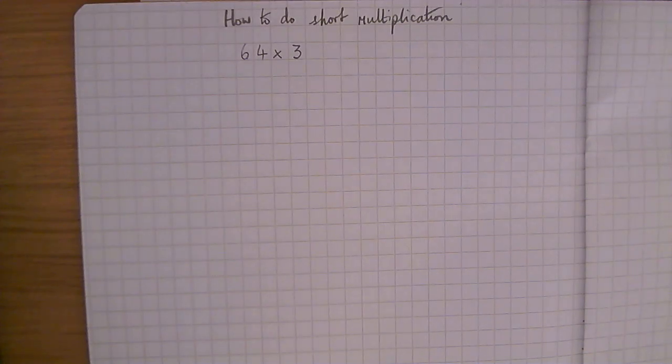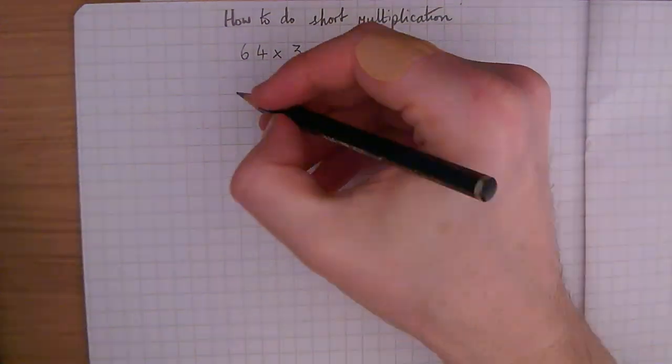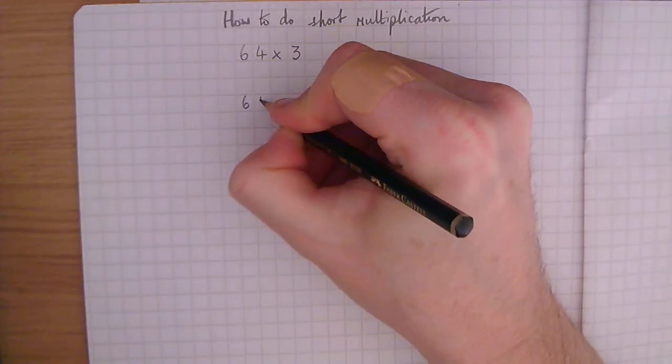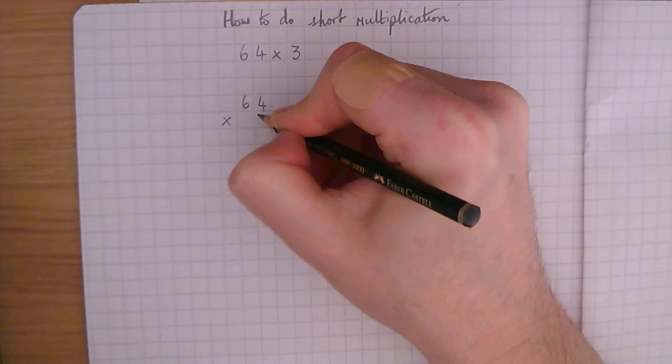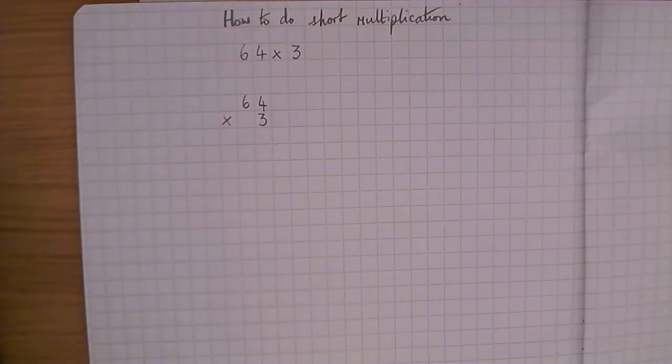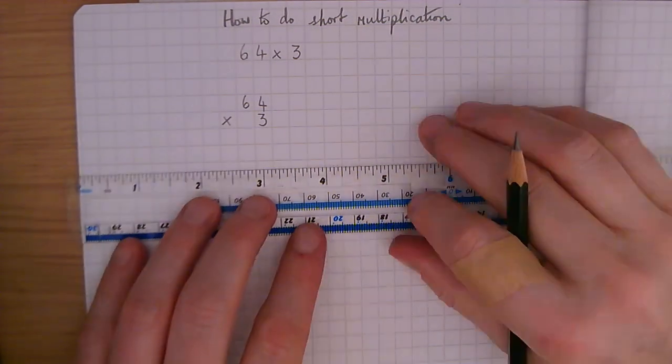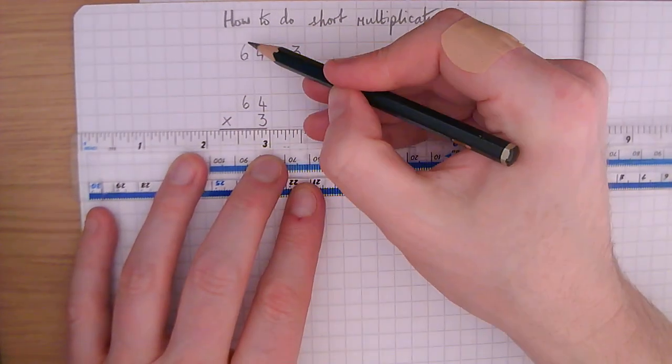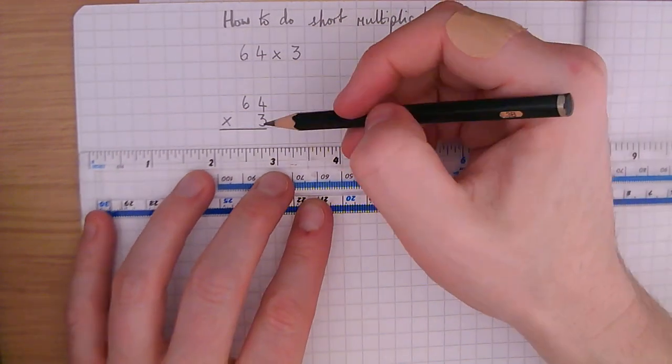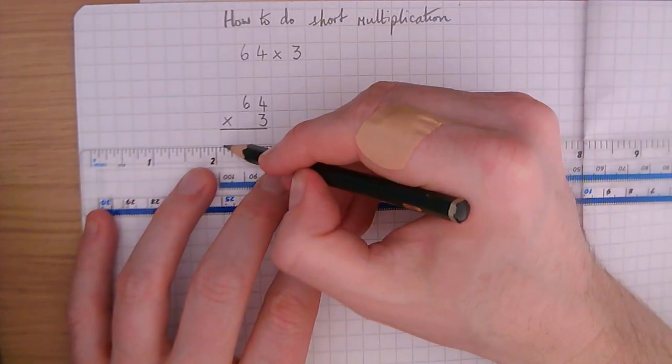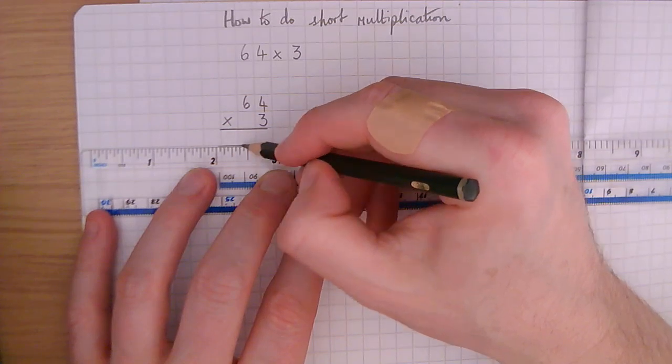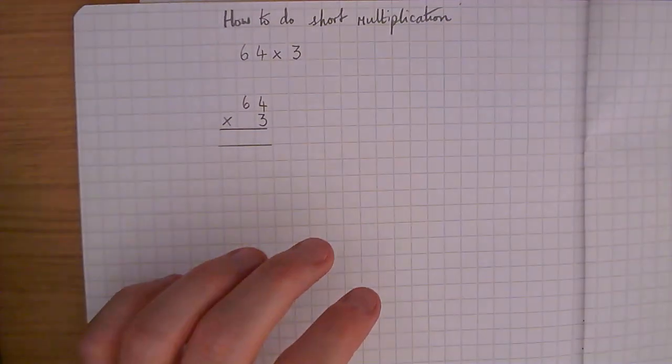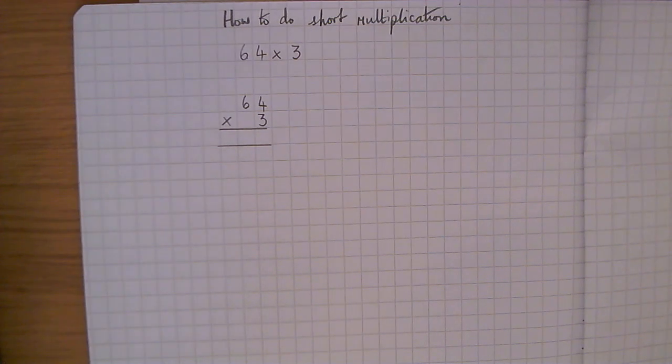How to do short multiplication. 64 multiplied by 3. Now we do a method like this, short multiplication, where the number here is greater than a number that we can multiply in our head. It's normally 12. So once we come above the 12 times table, it's normally best to write it out using this method.